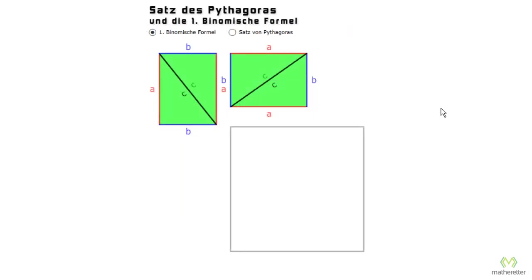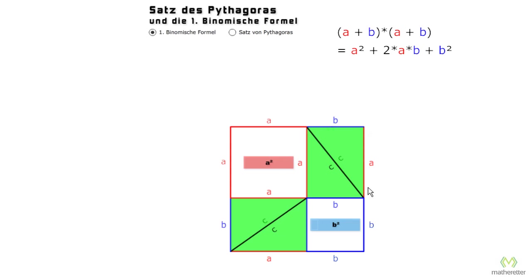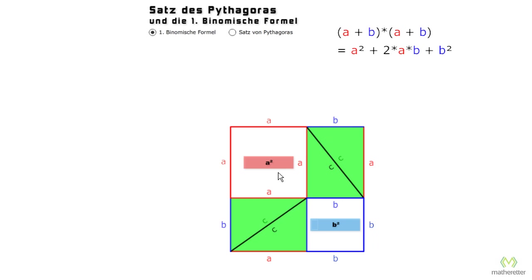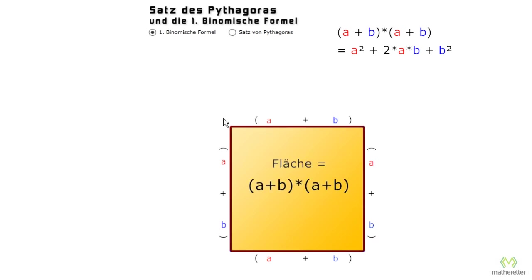So what we still need is the first binomial formula. We found that A plus B times A plus B equals A squared plus 2 times A times B plus B squared. Geometrically, that means the following area: here we have A squared, then a rectangle with A times B, and another rectangle with A times B — so we have it twice — and then B squared. In total: A squared plus 2 times A times B plus B squared. We have side A here and side B here, forming a square where one side is A plus B and the other side is A plus B.